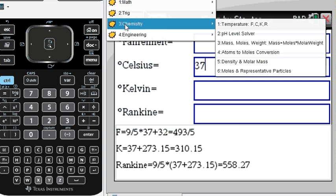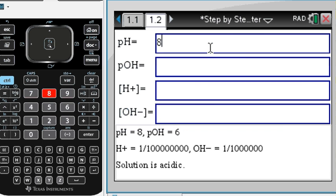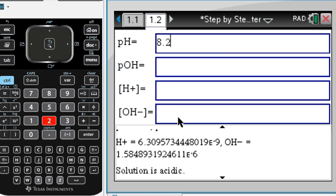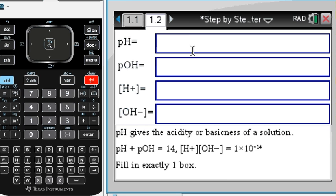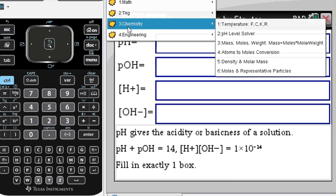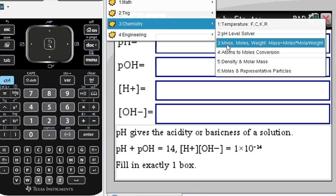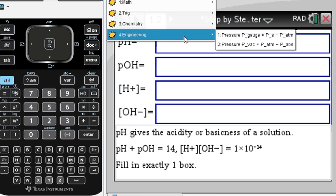pH level solver: 8.2 in pH converts to 5.8 in pOH, etc., as you can see here. So again, you just fill in one of the boxes and you get everything else. That is our pH solver. We also convert atoms to moles, density, molar mass, mass, moles, and weight can be computed.